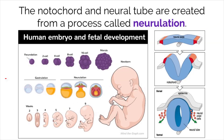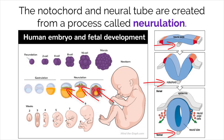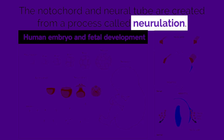During the gastrulation phase of development, the mesoderm cells in the middle get differentiated to create a structure called the notochord, which is depicted here. Once the notochord is formed, it signals ectoderm cells above it to fold and create a structure called the neural tube. This entire process is called neurulation.